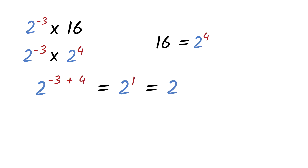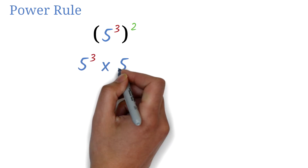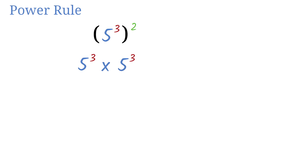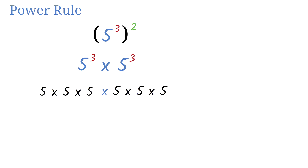Let's learn one more law of exponents: the power rule. It is possible to have a number with an exponent raised to another exponent. For example, 5 exponent 3, all exponent 2, means we are multiplying 5 exponent 3 two times: 5 exponent 3 times 5 exponent 3, which expands to six 5's, giving 5 exponent 6. The power rule states you can simply multiply the exponents: 3 times 2 equals 6, so the answer is 5 exponent 6.